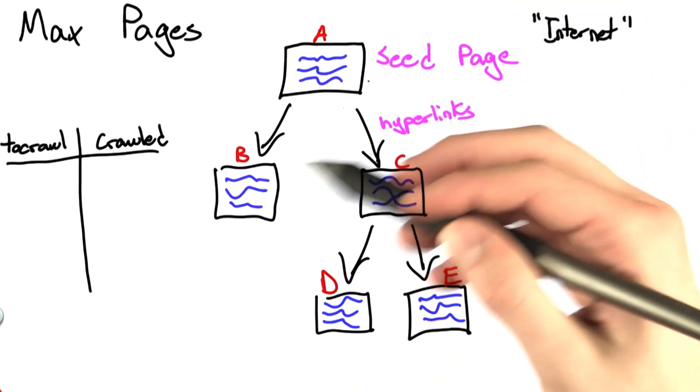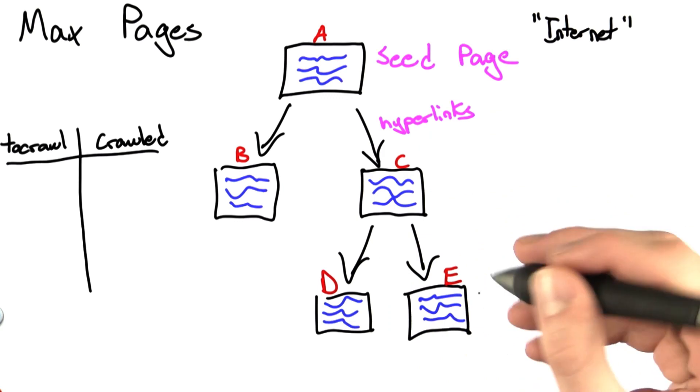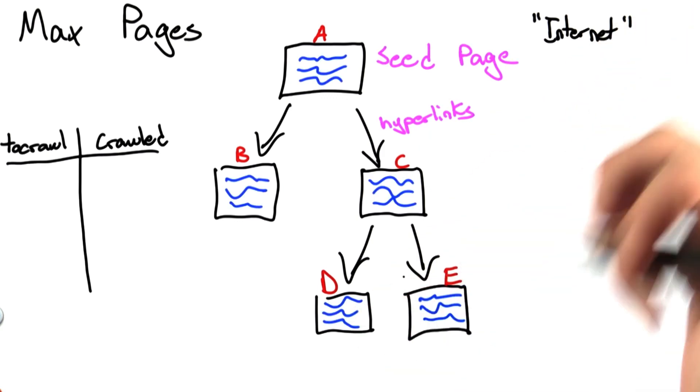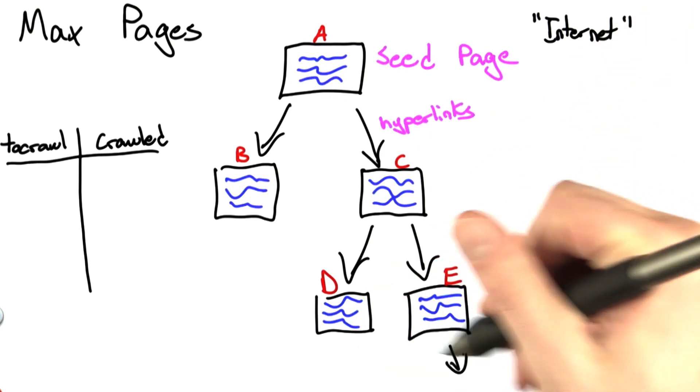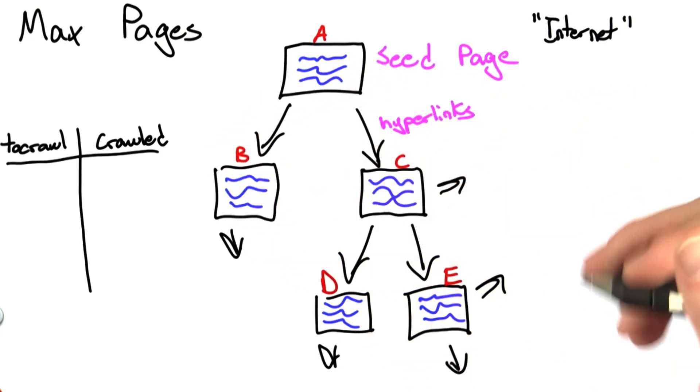The problem asks us to stop the crawler from crawling the internet after we've reached a certain number of pages. So if this were the real internet, there'd be a lot more links. We'd have links going basically for practically ever. There's billions of pages on the internet,